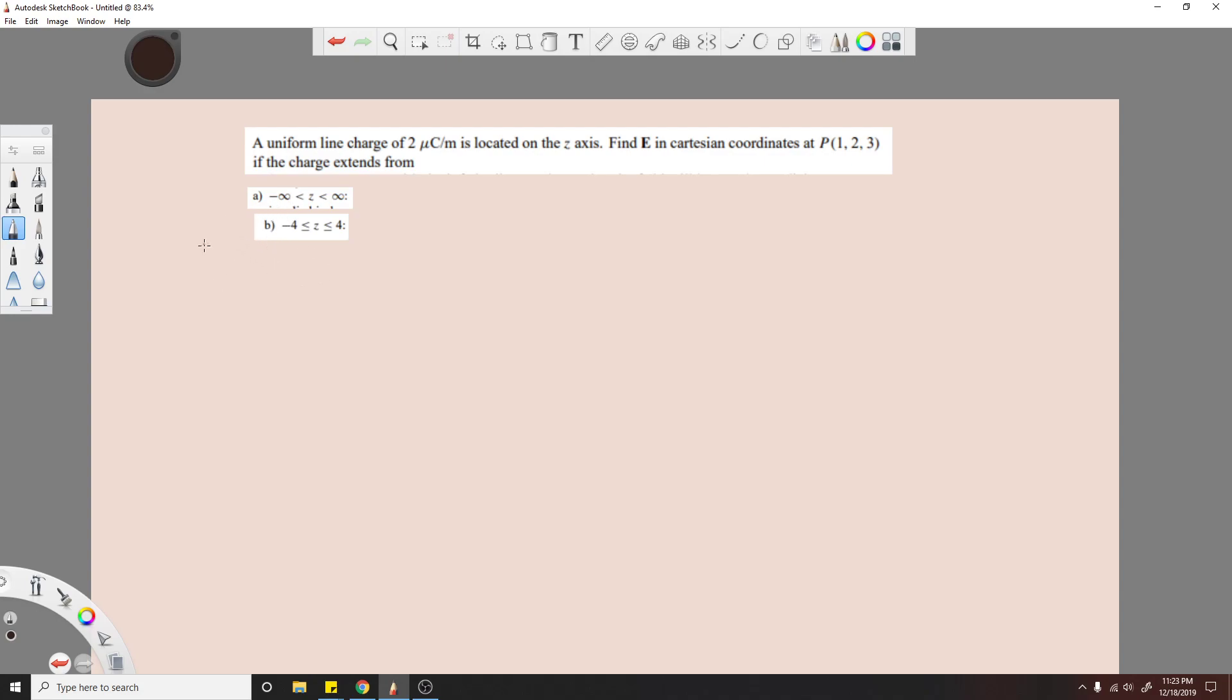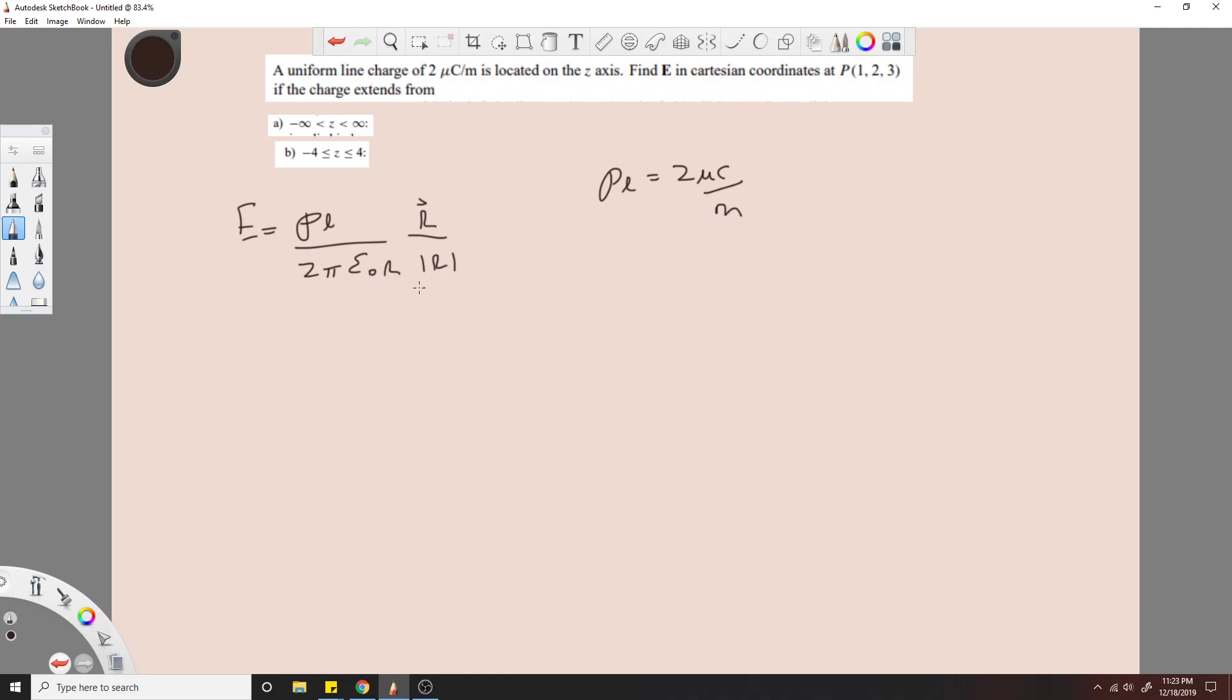For infinite line charge, we know we can use E equals rho L over 2 pi epsilon naught R times the unit vector. So that would be R over absolute R, right? So rho L is 2 microcoulombs per meter. The only thing we don't know here is the R.